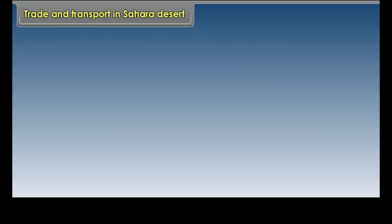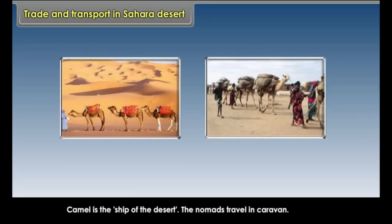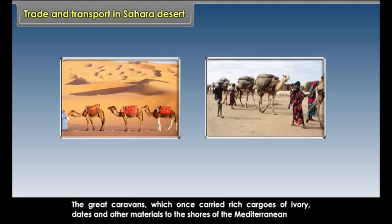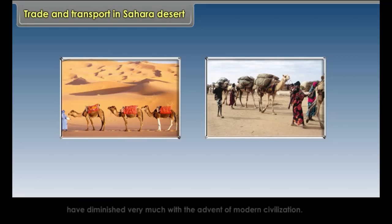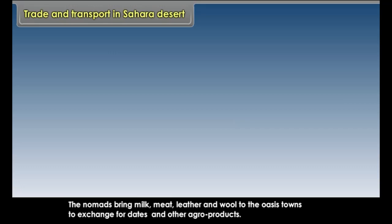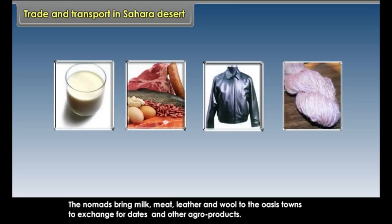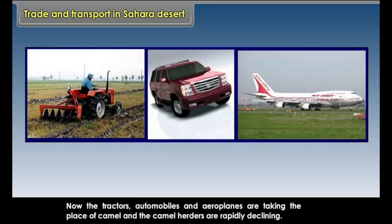Trade and transport in Sahara Desert: Camel is the ship of the desert. The nomads travel in caravans. The great caravans which once carried rich cargoes of ivory, dates, and other materials to the shores of the Mediterranean have diminished greatly with the advent of modern civilization. The nomads bring milk, meat, leather, and wool to the oasis towns to exchange for dates and other agro-products. Now, tractors, automobiles, and aeroplanes are taking the place of camels, and the camel herders are rapidly declining.